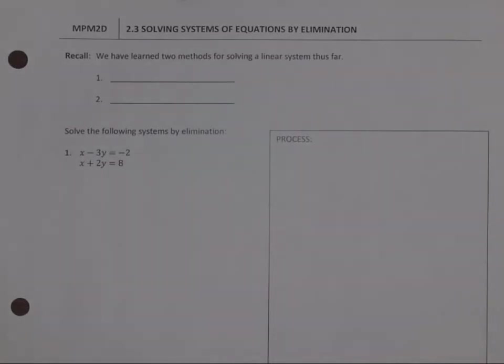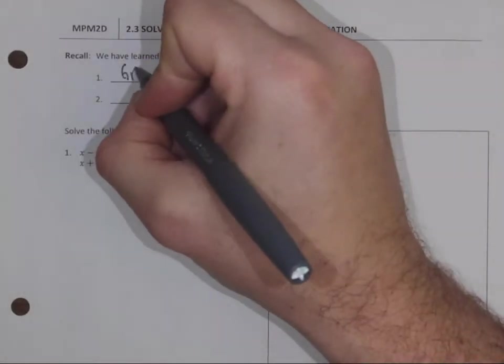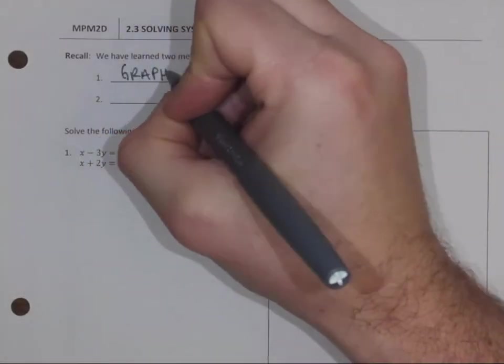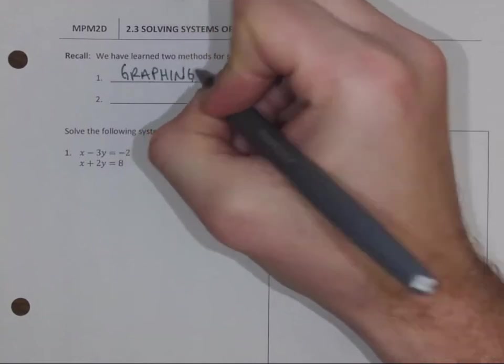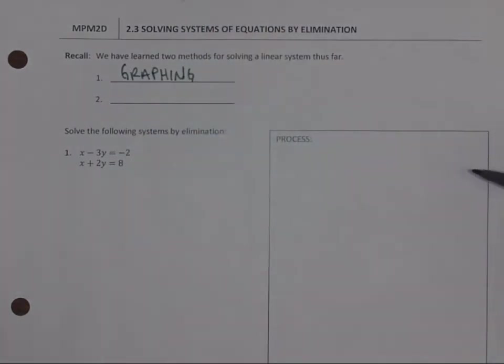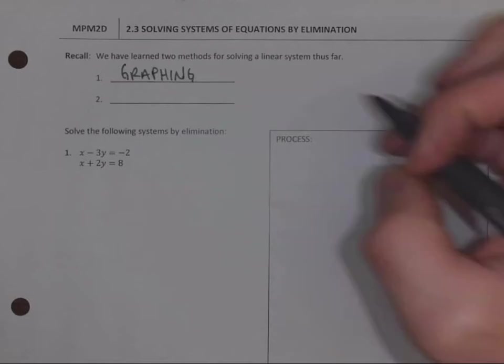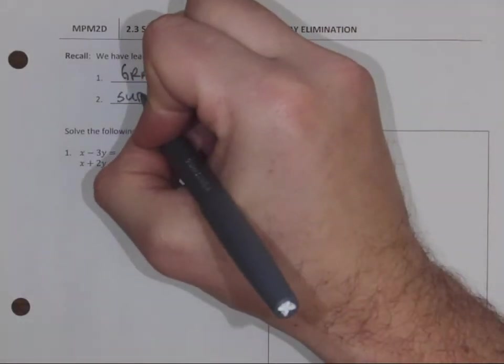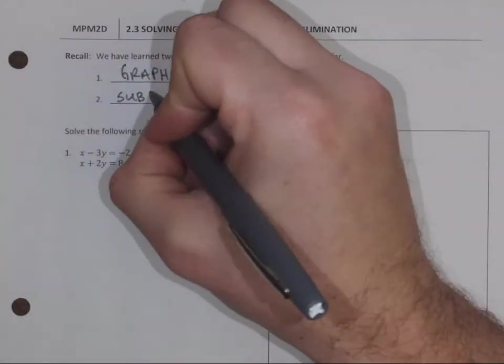Recall, we've learned two methods for solving linear systems thus far. The first one, from grade 9, is solving by graphing. If we have two lines, we can graph them and see where they intersect. And yesterday, we learned algebraically how to solve by substitution.